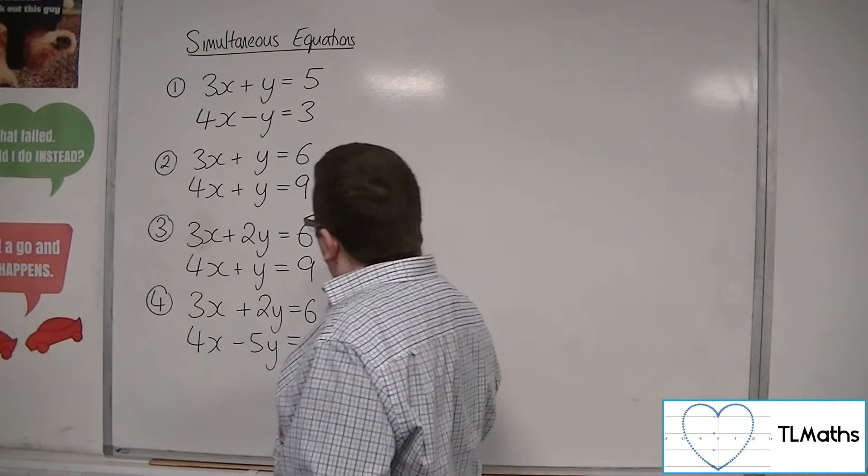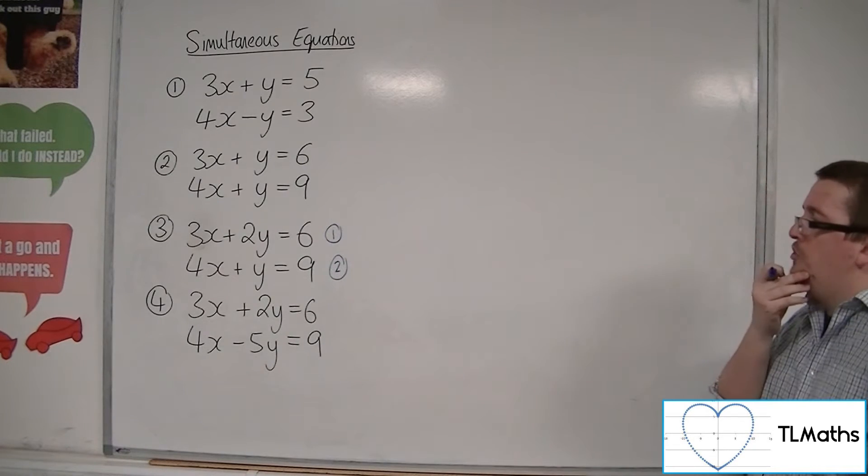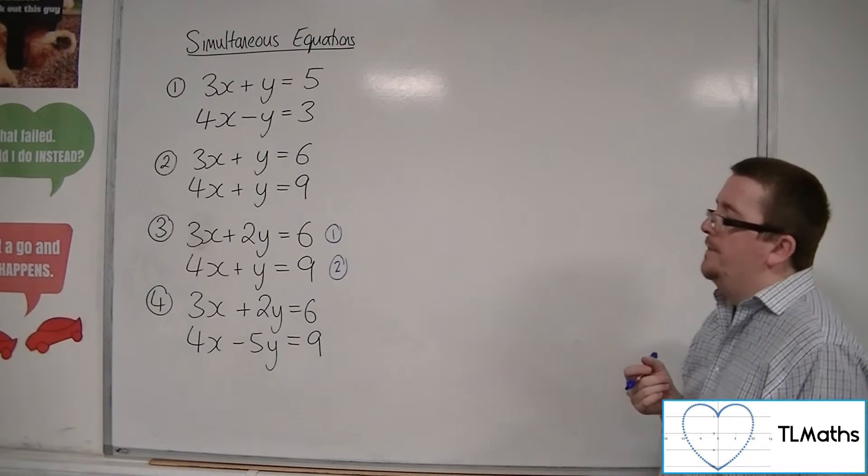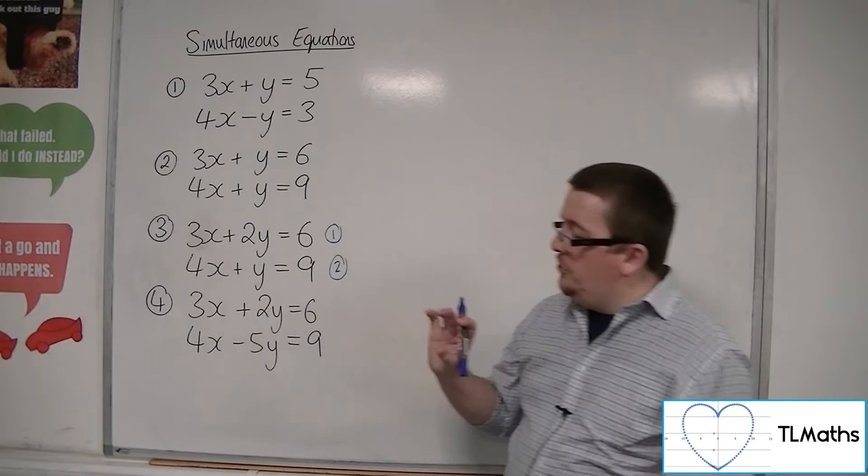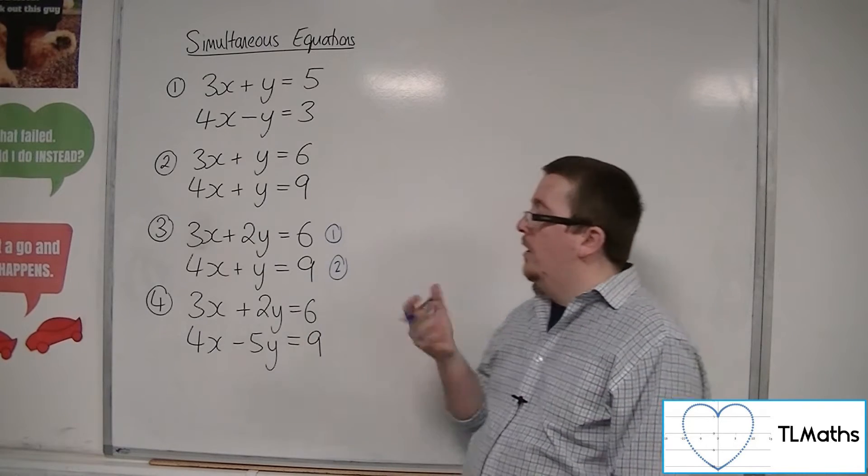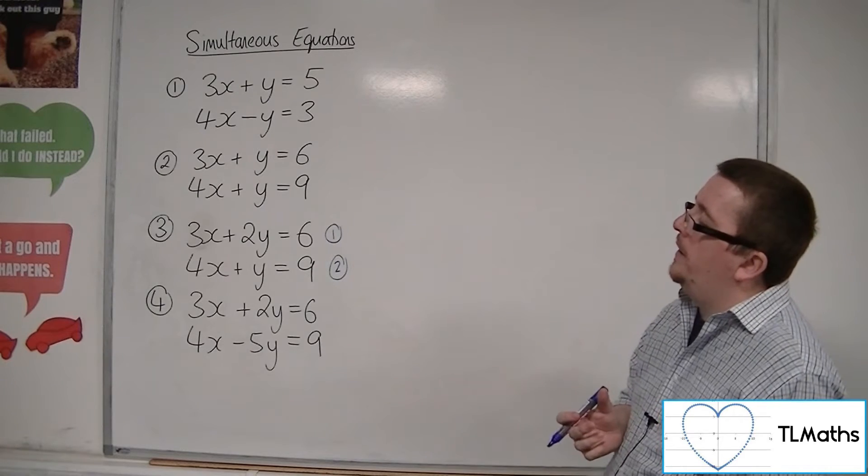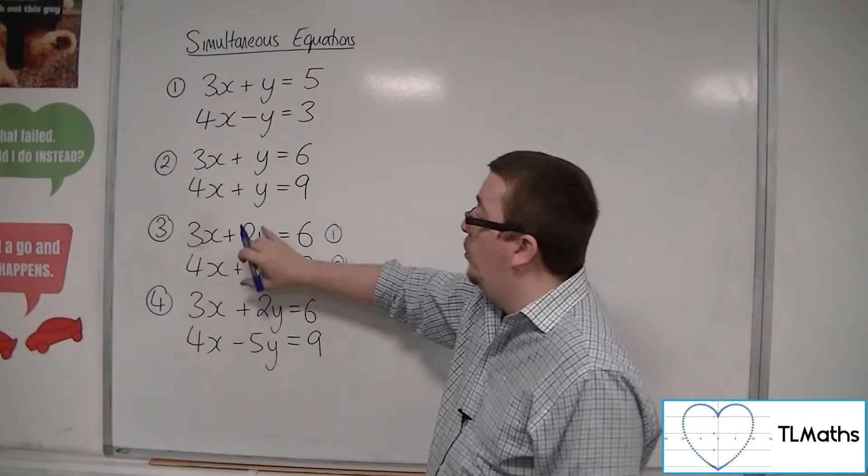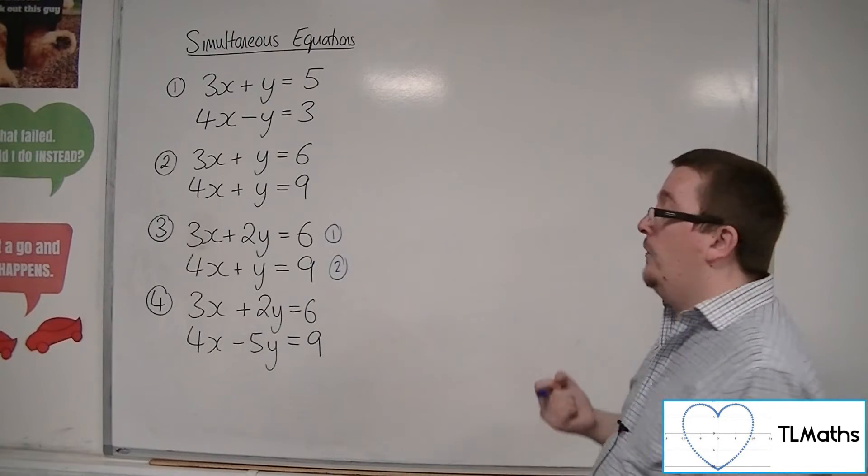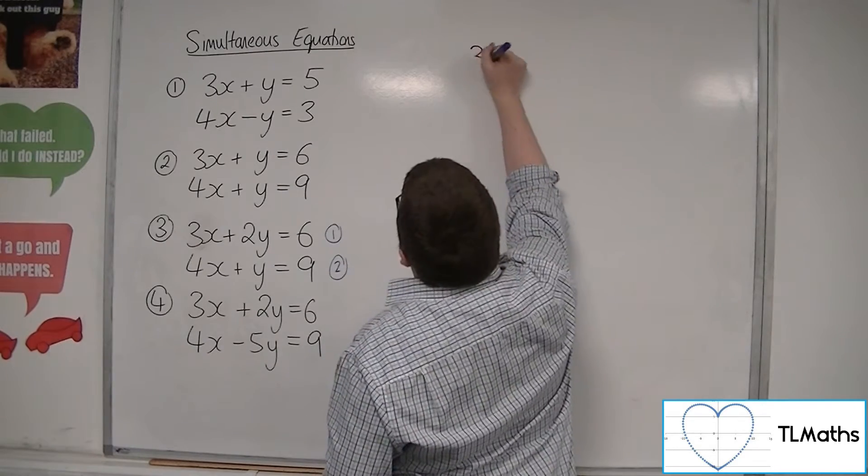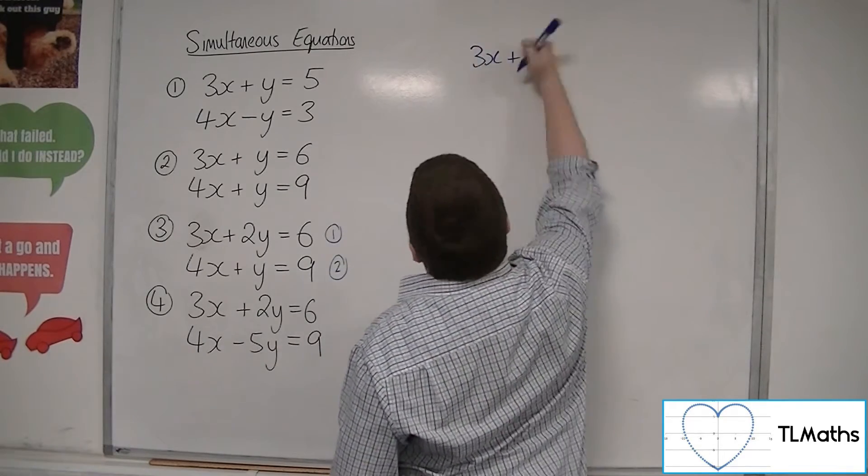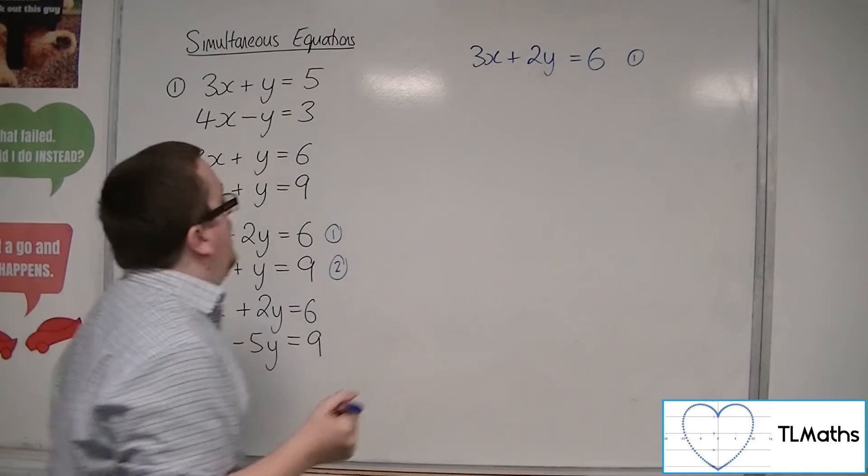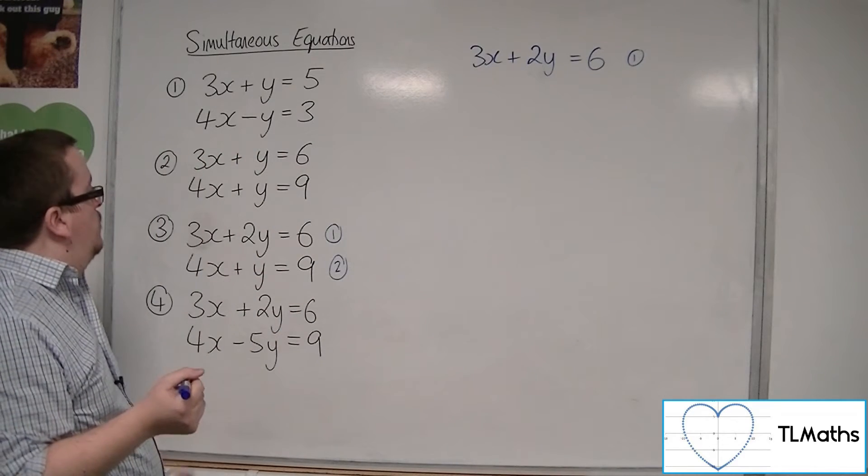So let's go with the pair of equations at number 3. We've now got 3x plus 2y equals 6 and 4x plus y equals 9. So at this point, I can choose to eliminate the x's or y's because there's no necessarily easier way of doing it. I've been looking at equation 2 and multiplying it by 2 so that I can get 2y on top and bottom. That seems like the easiest thing to work with.